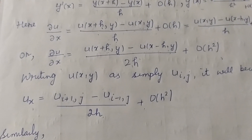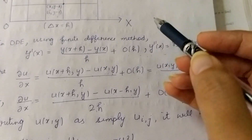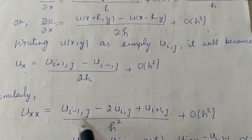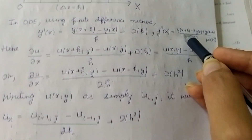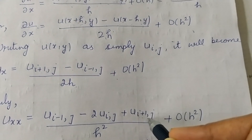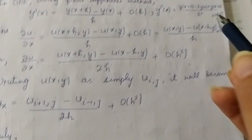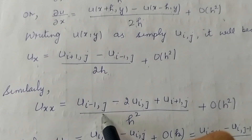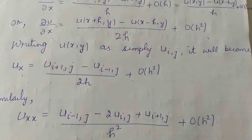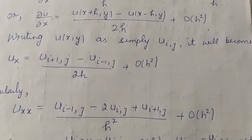For the second order derivative, I use the ODE formula and apply it to PDE. The result is: ∂²u/∂x² = [u(i+1, j) − 2u(i, j) + u(i−1, j)] / h² plus higher order terms of h². These two formulas — for first and second order partial derivatives with respect to x — are derived using the same finite difference method used in ODE.